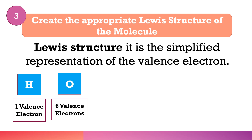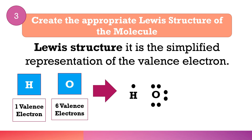For hydrogen, write the symbol H and place one dot to represent its one valence electron. For oxygen, write the symbol O and place six dots representing its six valence electrons — two dots on one side, then the remaining four distributed around. This is how the Lewis structures of hydrogen and oxygen look. Each dot on the elements represents the number of valence electrons.